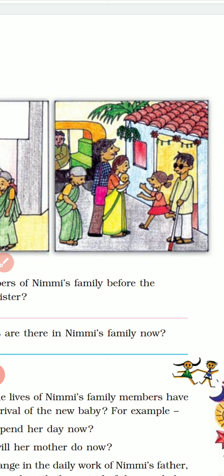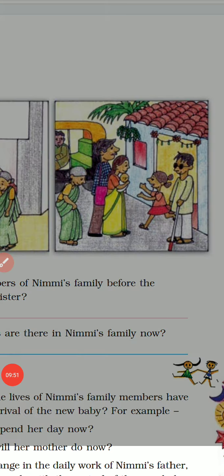So these are the two cases we discussed today — we discussed about Zering and we discussed about Nimi. Next, Nazil's story we will discuss tomorrow. Okay children?